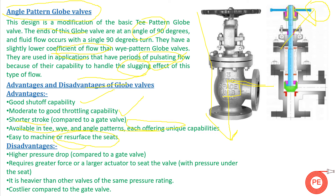The disadvantages include: the biggest drawback is the higher pressure drop due to their internal geometry, especially compared to gate valves. They also require greater force or a larger actuator to seat the valve, particularly when already under a throttling system. Globe valves are heavier than other valves of the same pressure rating because of the internal geometry, and consequently are also costlier compared to gate valves.